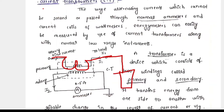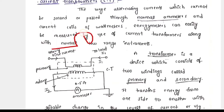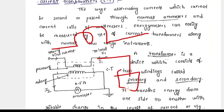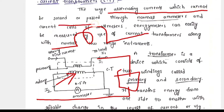The symbol of CT — normally the primary winding has very few turns and it is connected in series with the load. The large alternating current which cannot be sensed or passed through normal ammeters and current coils of wattmeters or energy meters can easily be measured by the use of a current transformer. The primary current of a CT depends on the load current — that is important.